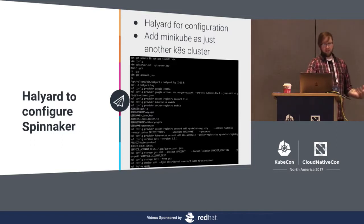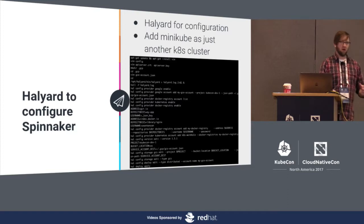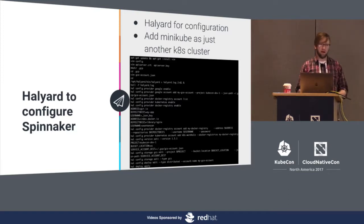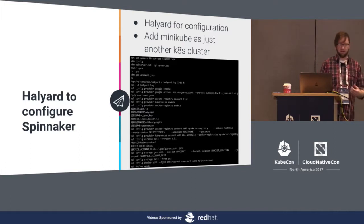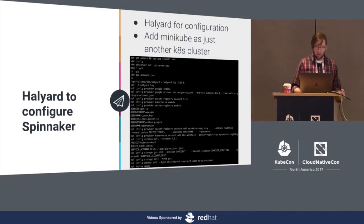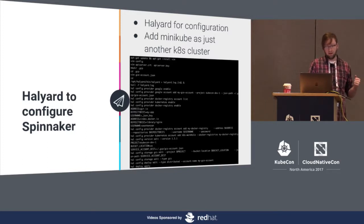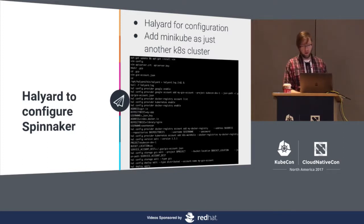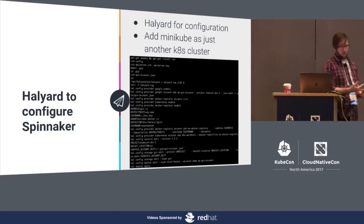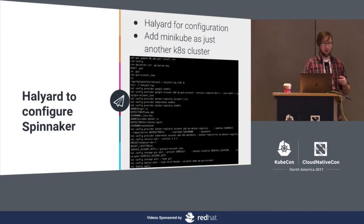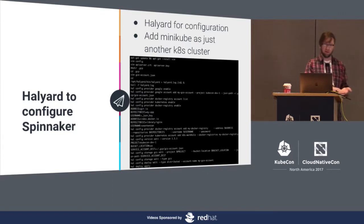How do we configure Spinnaker? All configuration files are in YAML, and in an operational model all microservices are broken out into separate containers. There is a tool called Halyard. Halyard supports GKE as well as a local distribution. I used it in distributed mode to configure my Spinnaker instance and add in multiple different cloud providers — and Kubernetes is a cloud provider; Minikube is a cloud provider in this case.